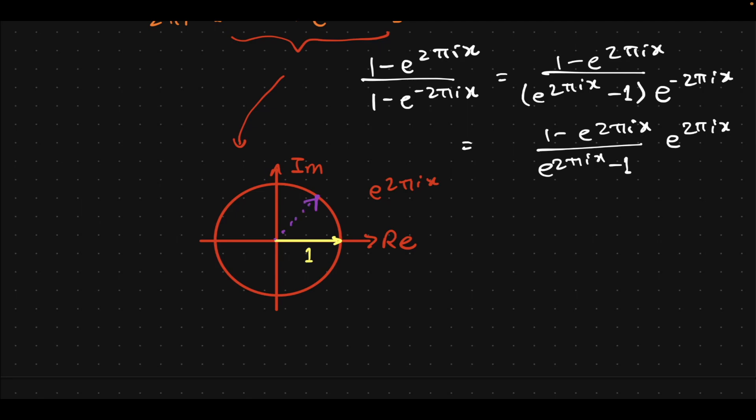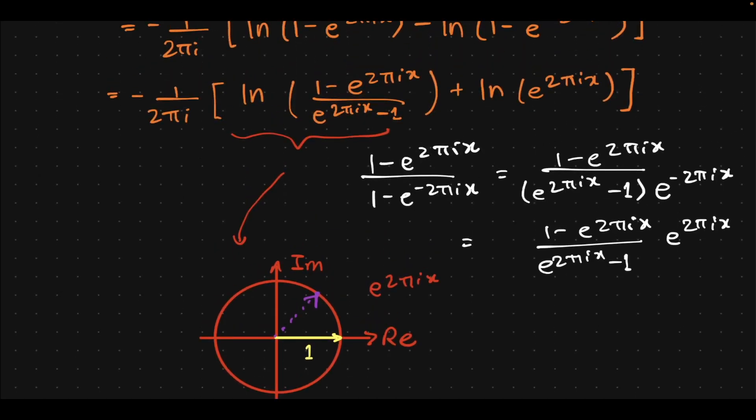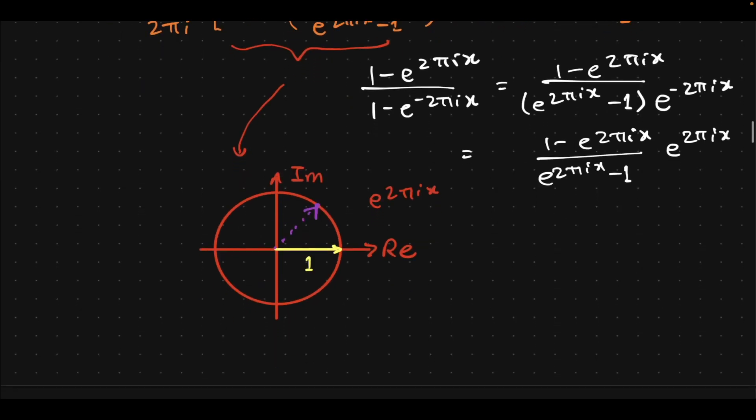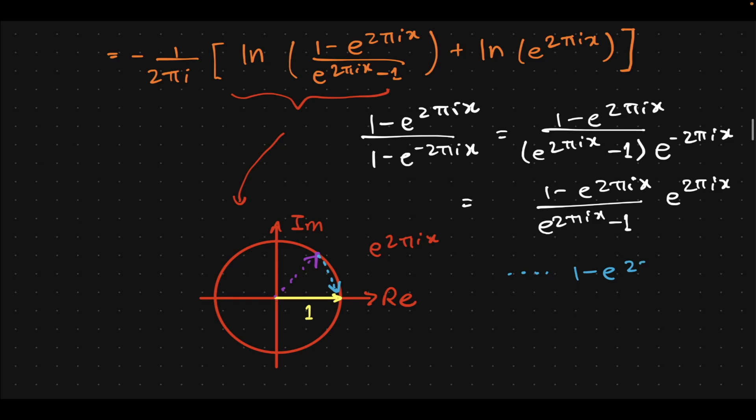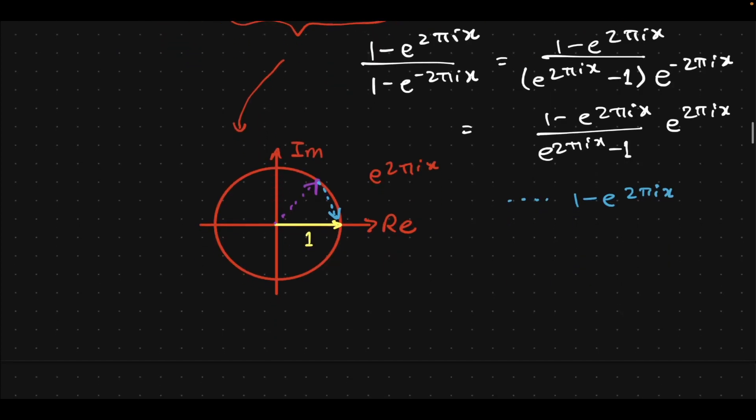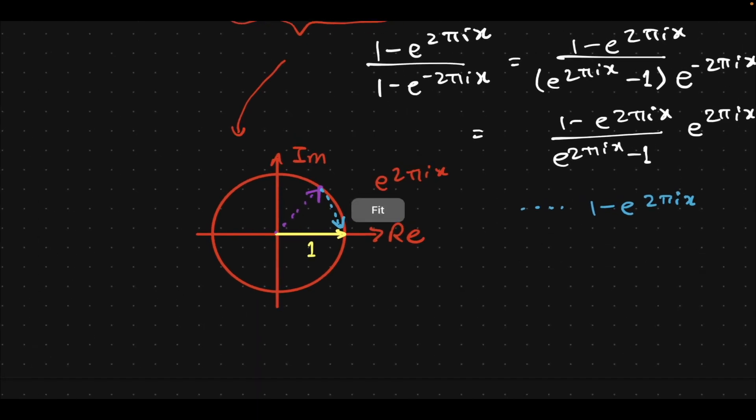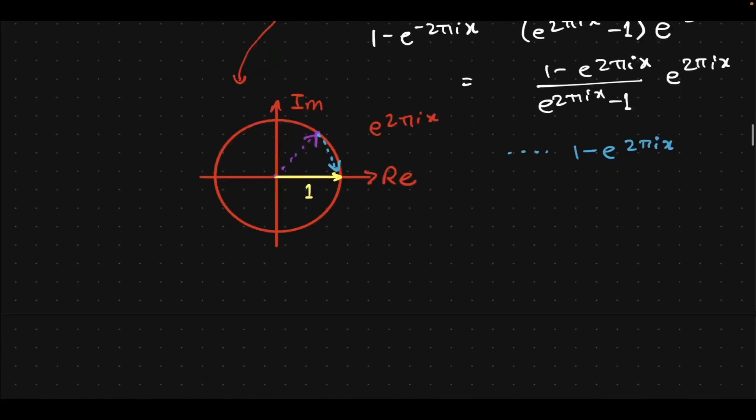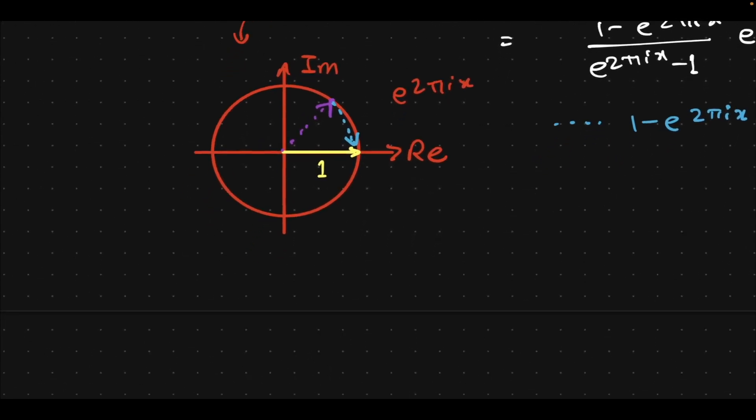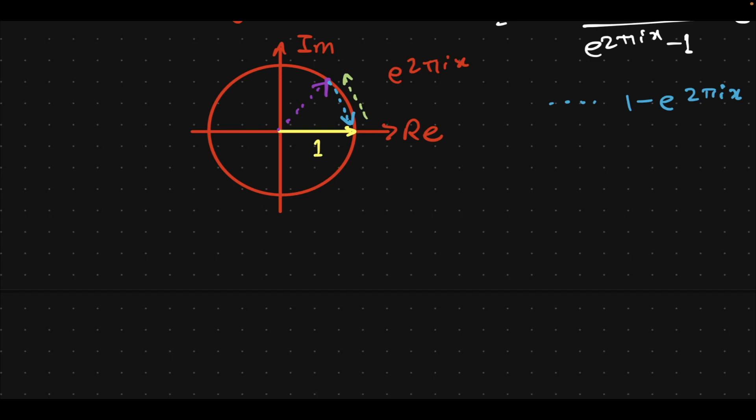And let's take any arbitrary point to be the value of e^(2πix) for some x. So we have these two vectors. Now the numerator, 1 minus e^(2πix), looks a little like—let me draw it out—so the blue vector is 1 minus e^(2πix). That's sort of the numerator. And e^(2πix) minus 1 will be the flipped version of that; it will be this green vector.